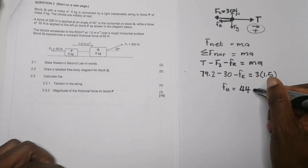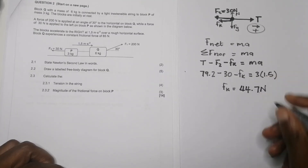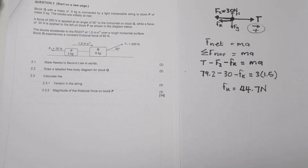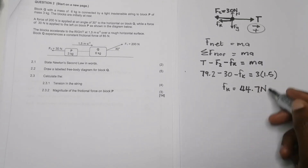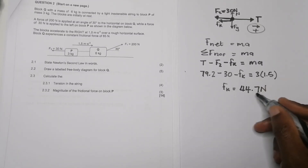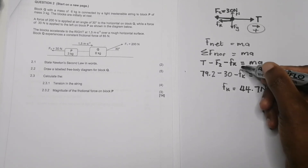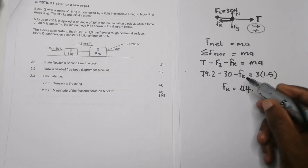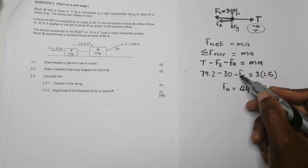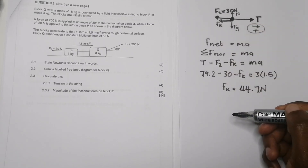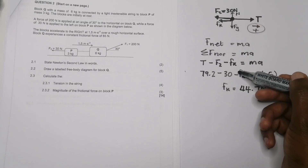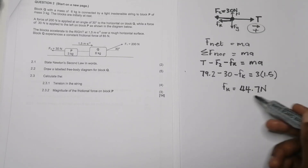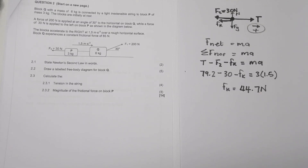This gives a frictional force of 44.7 newtons. Some may wonder why the answer is positive — remember, we already accounted for the direction of friction by placing a minus sign in the equation, so the result is simply the magnitude of the frictional force on block P.